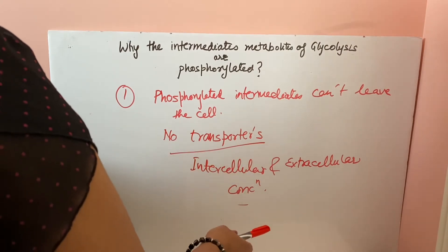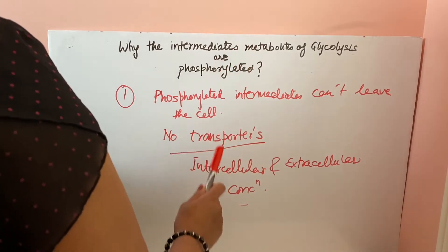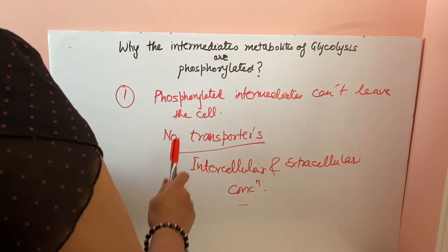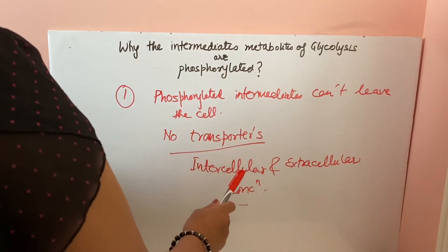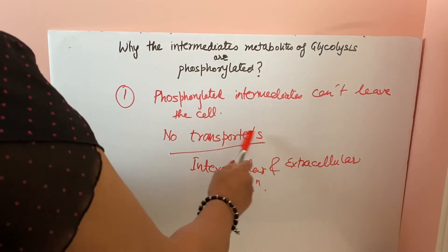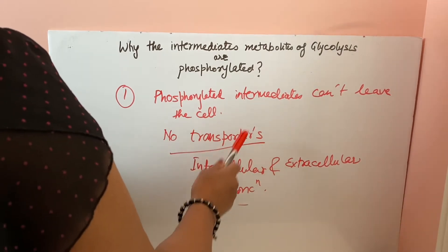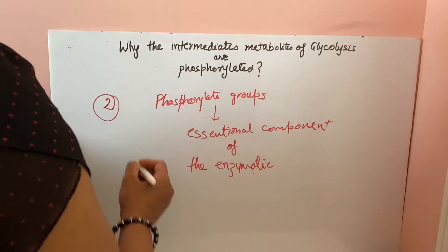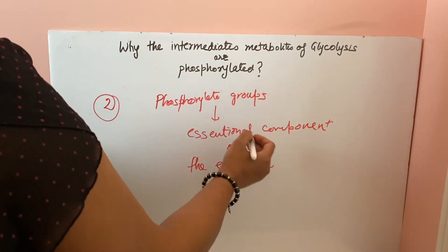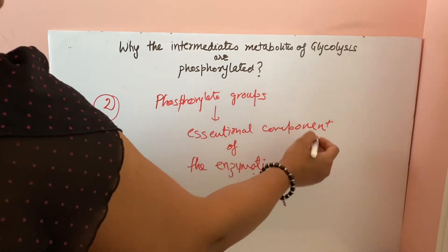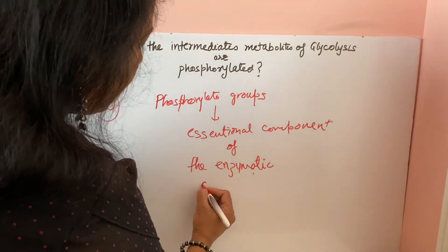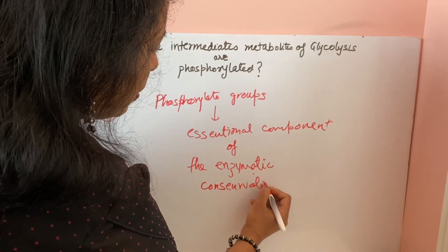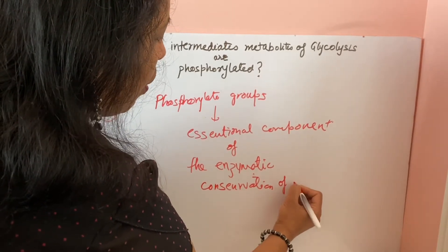There is too much difference between the intracellular and extracellular concentration of these molecules, yet the phosphorylated intermediates cannot leave the cell because of the absence of plasma membrane transporters. The second reason is that phosphorylated groups are an essential component of the enzymatic conservation of energy.